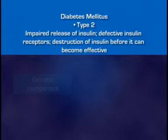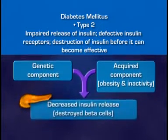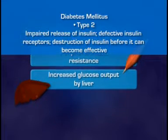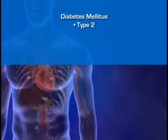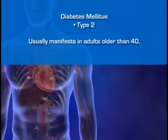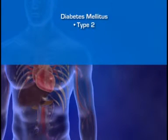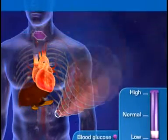Type 2 diabetes is far more common than type 1. As with type 1, the pathophysiology of type 2 diabetes involves both genetic and acquired factors. Among acquired factors, obesity and physical inactivity are of paramount importance. The metabolic abnormalities that lead to type 2 diabetes include insufficient secretion of insulin by the pancreatic beta cells, peripheral insulin resistance, and increased glucose output by the liver. In type 2 diabetes, hyperglycemia develops despite the availability of insulin. Type 2 diabetes usually manifests in adults older than 40, although it is being diagnosed in increasingly younger patients, and can often be controlled by diet, exercise, and oral hypoglycemic agents.